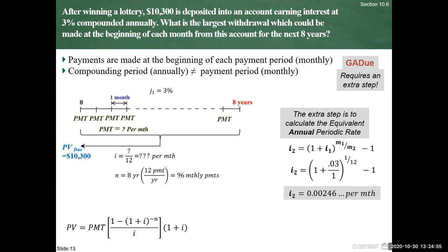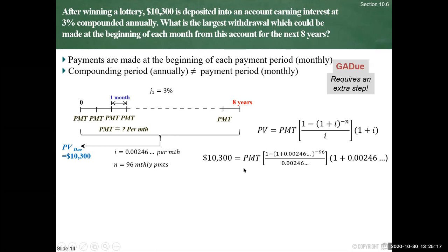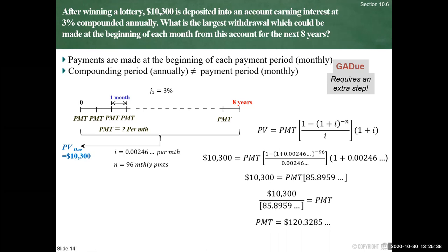We put this into the present value annuity due formula. Remember, the annuity due formula has the extra term (1 + i). Plugging in our values and calculating the right-hand side, we get 10,300 equals our unknown payment times 85.8959... Rearranging, the payment comes out to $120.3285..., which rounds to $120.33.